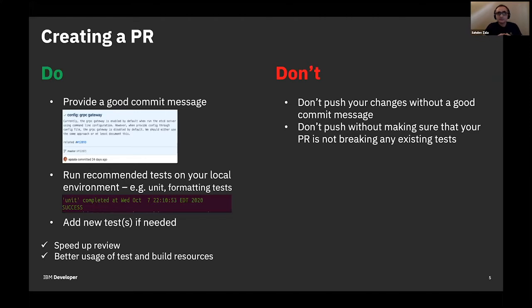Second thing: don't push without making sure you run all the recommended tests. All open source projects should have some sort of test suite — unit testing, formatting testing, that kind of thing. Make sure you run those in your local environment before you push. Third thing: if you're adding something new, like a new utility function, make sure you also create a test for it. This helps speed up the review process, and you are utilizing build resources in a better way because you've already tested it.